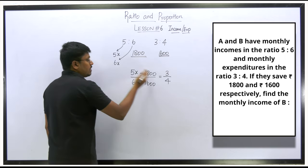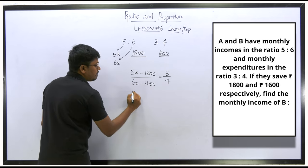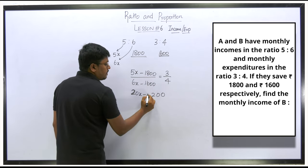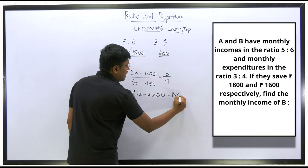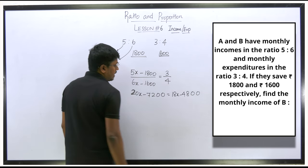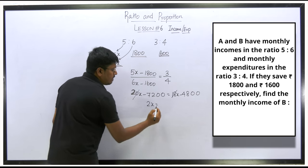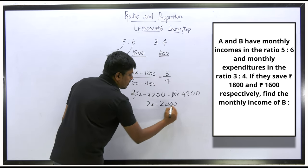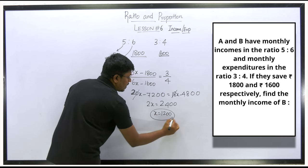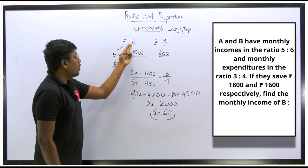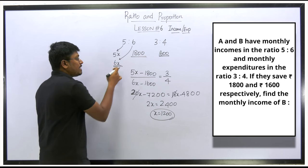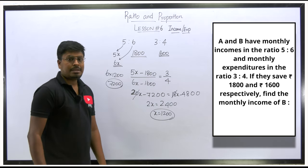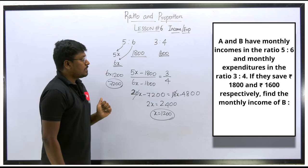Solving: 20x − 18x = 7,200 − 4,800, so 2x = 2,400, giving x = 1,200. The target is the income of person B, which is 6x = 6 × 1,200 = ₹7,200.